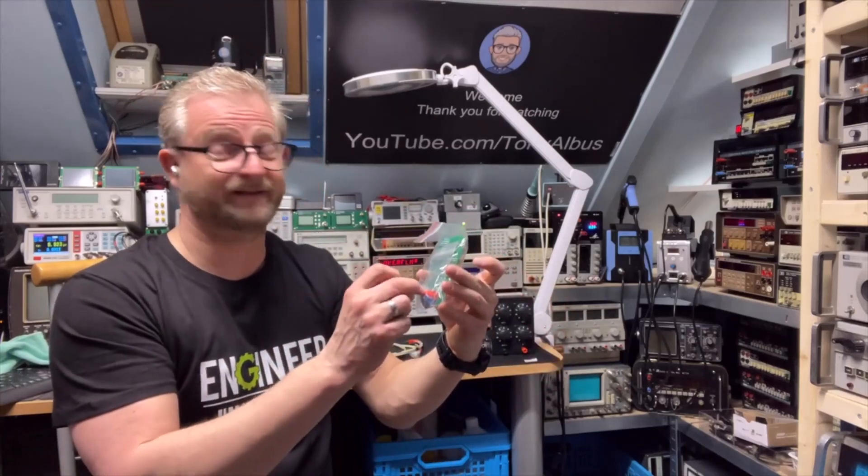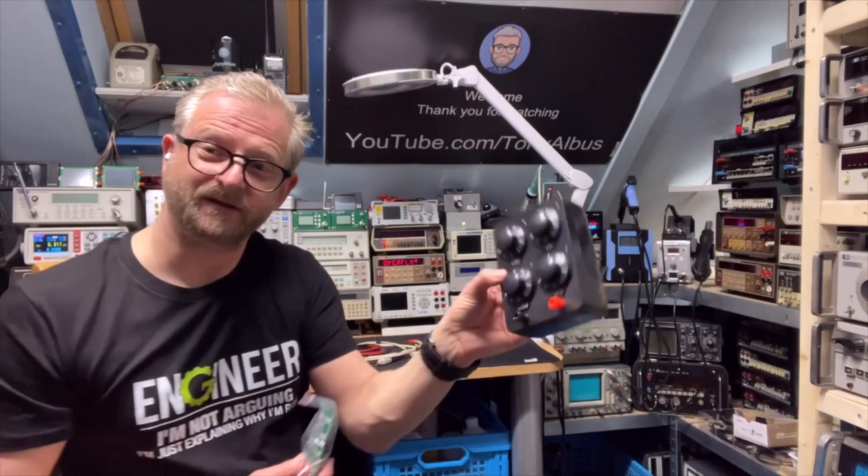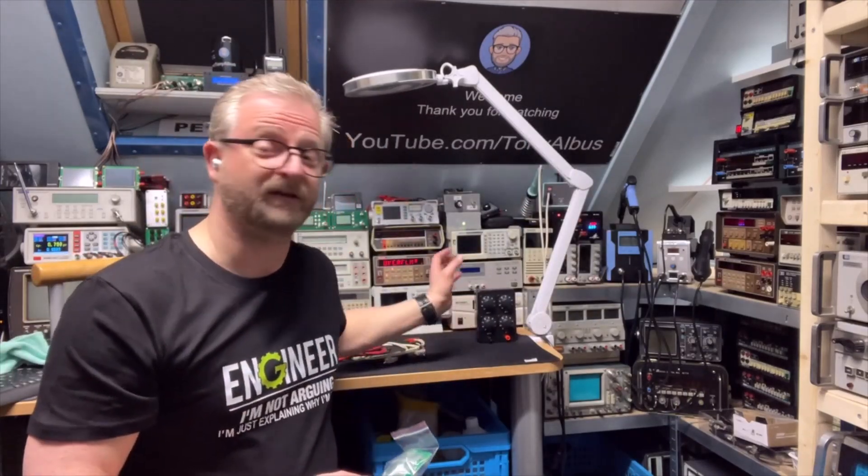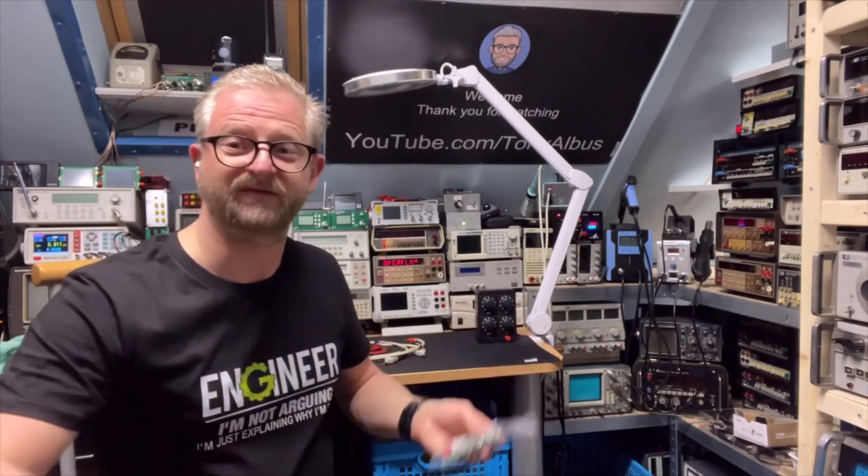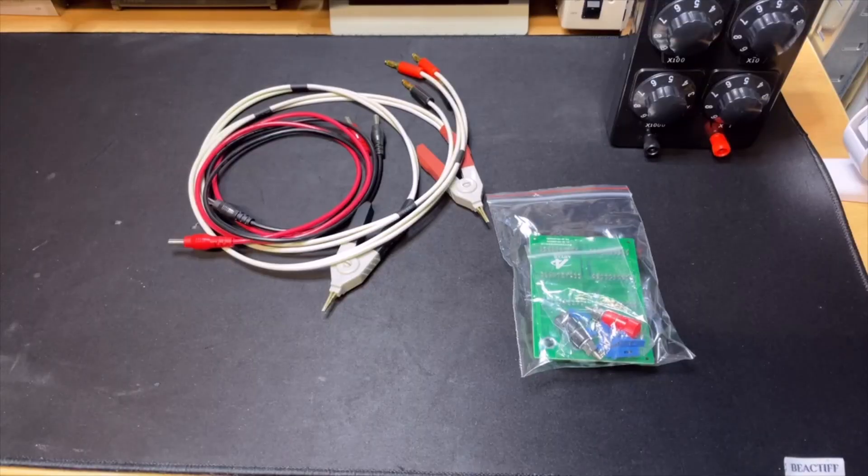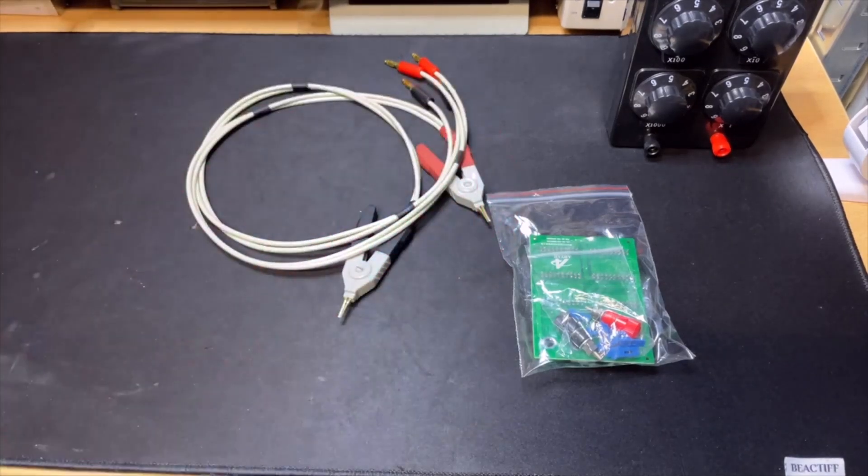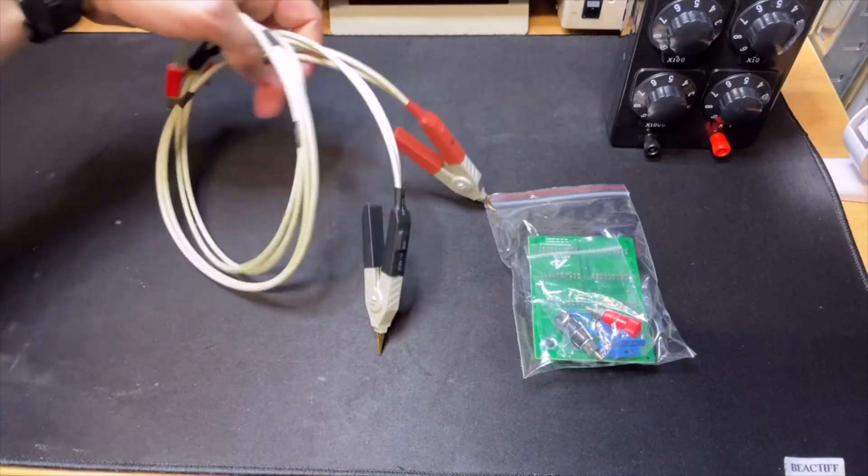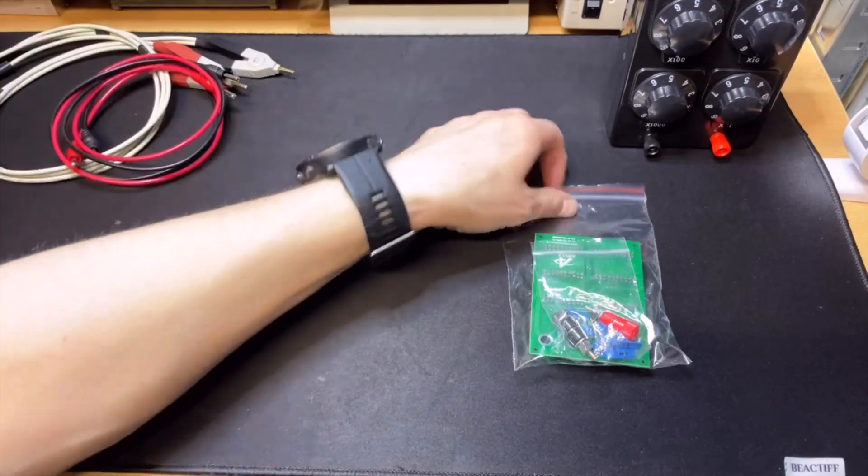The good thing is you can actually put your bananas in, so the plugs that we needed to do here ourselves are already here. Let's put the thing together. Okay, here we have it. I also have the normal bananas and I have the two and four wire, these are the Kelvin clips.